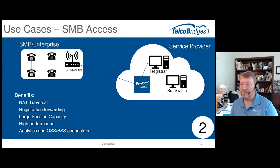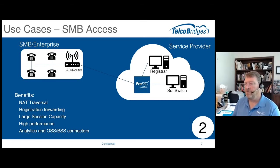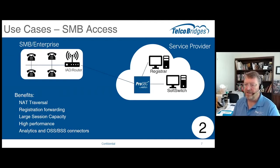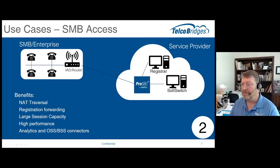One of the key things that ProSBC is responsible for is managing that NAT traversal. Also, registration forwarding — as registrations come from those individual IP phones, it needs to forward them over to a registrar. Session capacity is important because they have more than one SMB or enterprise, aiming for thousands of them. Performance is important — delivering voice and traffic through at a high rate. And having analytics and connectors for management to provision and manage the setup between the SMBs is important.